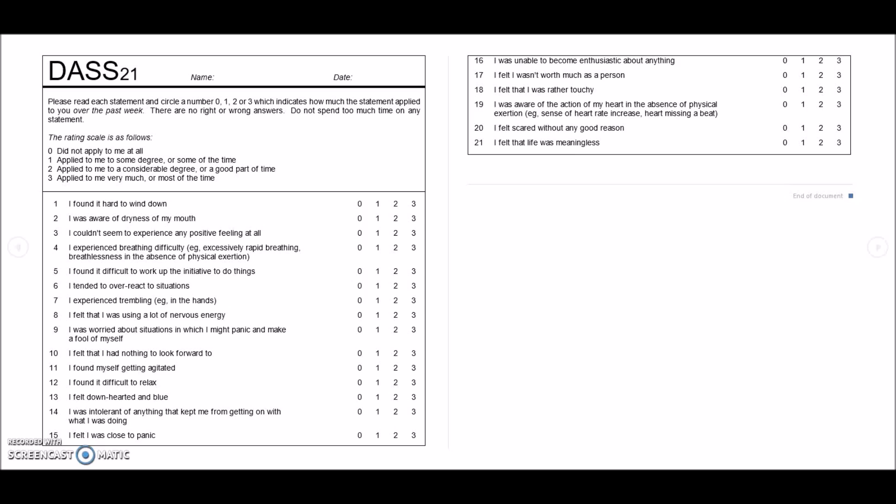Each question is scored on a four-point Likert Scale from 0 to 3, with 0 corresponding to did not apply to me at all, and 3 with applied to me very much or most of the time, as you can see described in this document right here. The higher patient scores in the survey, the more often they are experiencing symptoms.